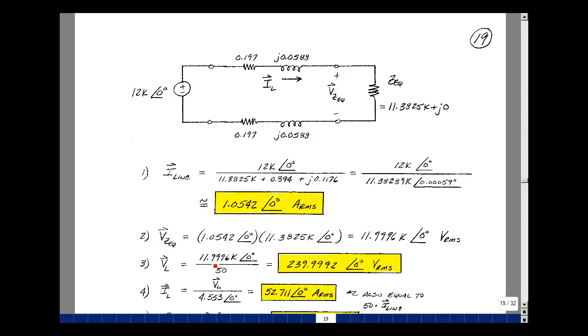The voltage across Z equivalent, which is where our input of our transformer is, would be that current times the impedance that it sees. And so it would produce about 11,999.6 volts RMS.